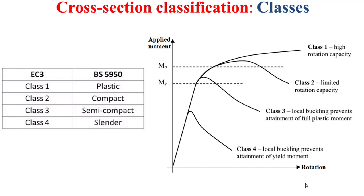This figure presents the cross-section rotation induced by the applied bending moment for the different cross-section classes. MP presents the plastic moment and MY presents the elastic moment. As you can notice, a Class 1 cross-section can perform its plastic moment resistance with high rotation capacity without reduction of its resistance. This means that an increasing applied bending moment will continue to cause more rotation of the cross-section. For the Class 2 cross-section, it can perform its plastic moment resistance but with limited rotation capacity.